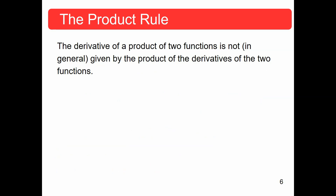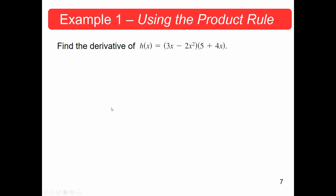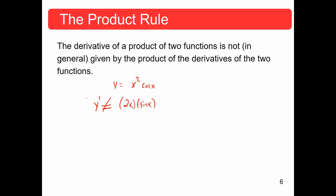The derivative of a product of two functions is not, in general, given by the product of the derivatives of the two functions. For example, x²·cos(x) is not equal to just the derivative of the first times the derivative of the second — that is definitely not the rule. There are some times where it just happens to work out, but it's not because that is the correct rule.